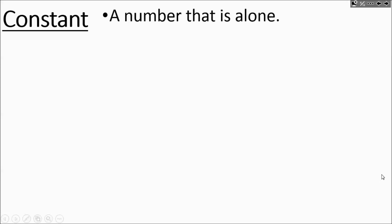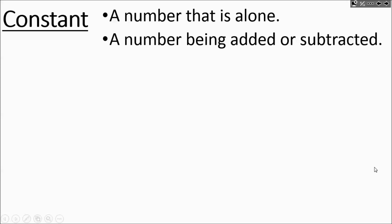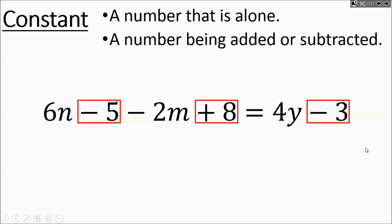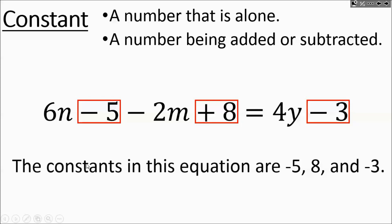Now we'll talk about types of terms. The first type is a constant — a number that's alone, usually being added or subtracted. In this statement, the constants are negative 5, 8, and negative 3. There is also a 6 and a negative 2, but those aren't numbers by themselves — they're multiplying by a variable, which we'll cover in a moment.